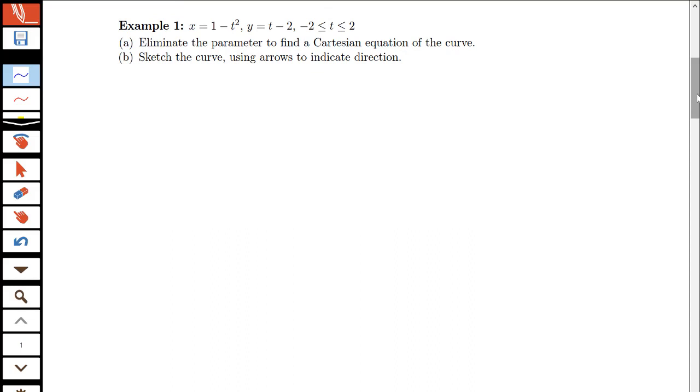For this initial example we want to focus on being able to eliminate the parameter. Here I'm given these equations: x = 1 - t², y = t - 2, where t is between -2 and 2. I want to eliminate the parameter to find what we call a Cartesian equation—that means an equation with just x and y of that curve. And then we also want to sketch the parametric curve that's given by these equations and use arrows to indicate direction.